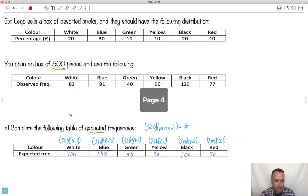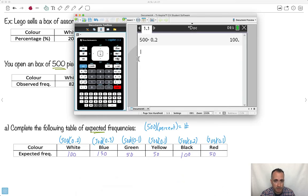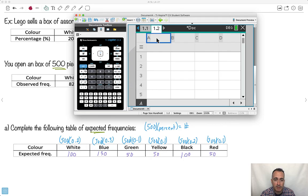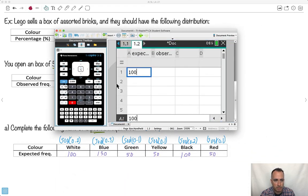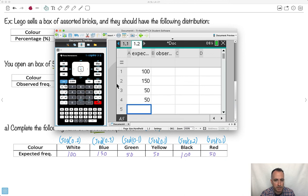I need to first put everything into a list. Let me open up a new page. I'll do a list, and I'll name it expected and observed. So I've got a column called expected, a column called observed. Let's go ahead and do expected. Expected should be 100, 150, 50, 50, 100, 50. I'm supposed to go down the list.